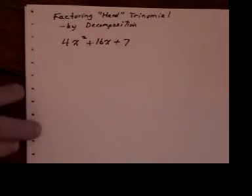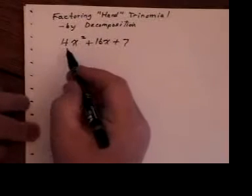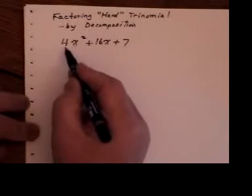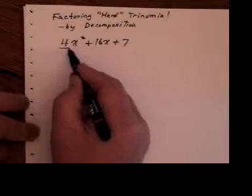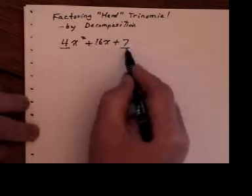This is factoring the hard trinomial by decomposition. Now, as I showed you in the last video, we know it's a hard trinomial because 4 goes into there, but 4 does not go into all 3 terms.